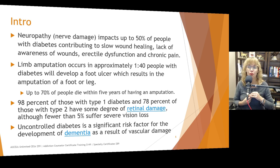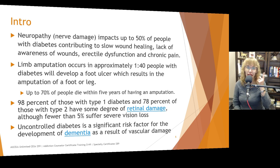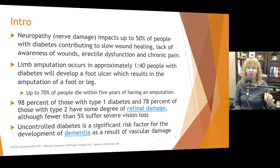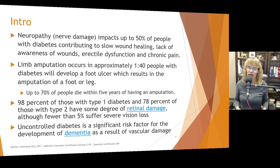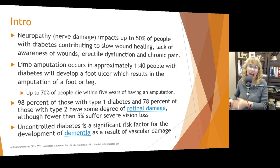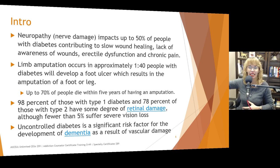98% of those with type 1 diabetes and 78% with type 2 will have some degree of retinal damage, but fewer than 5% suffer severe vision loss. If people start developing peripheral retinopathy, they may assume they're going to go blind. It's important to help them get the facts — with early detection and the steps they can take, the likelihood they will progress to blindness is very low since fewer than 5% actually reach that stage.